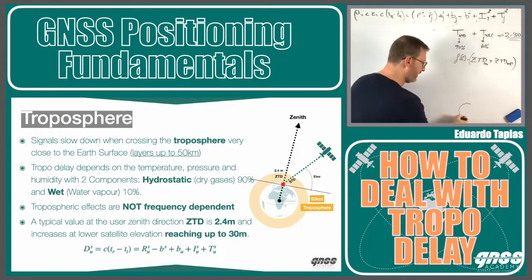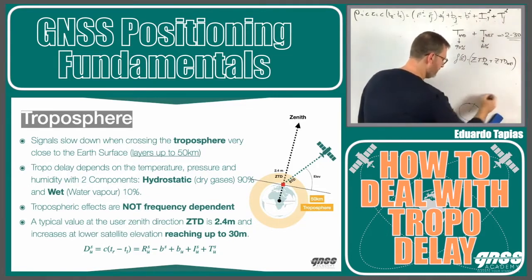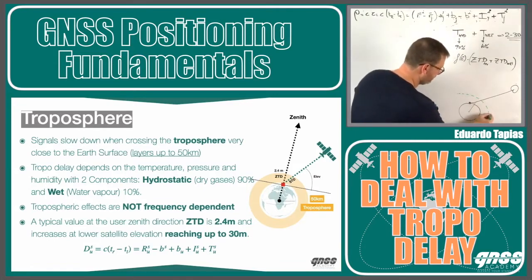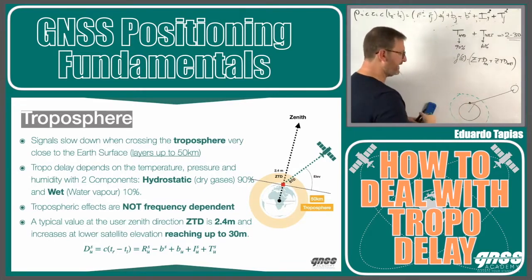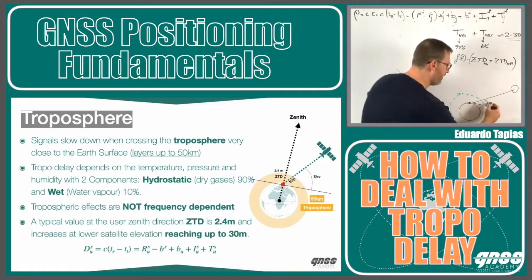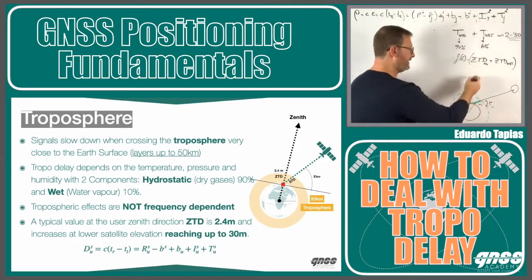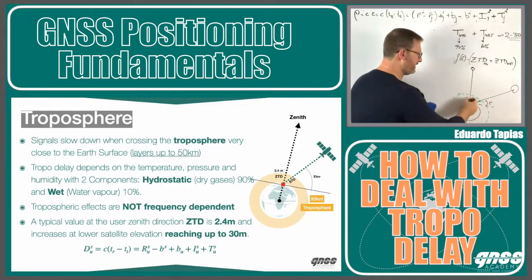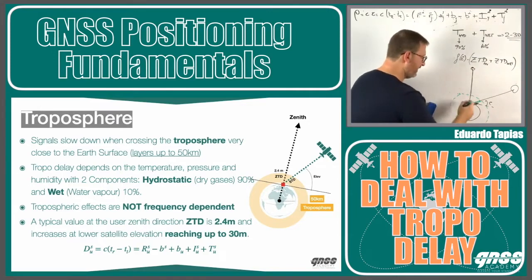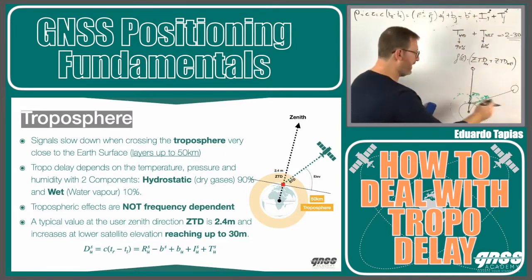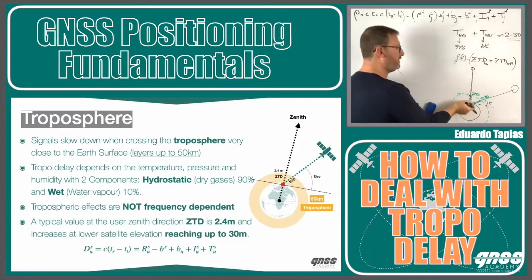Let's imagine you have the Earth, a receiver here, and a satellite here. If we put the troposphere layer here, a satellite at low elevation angles crosses more troposphere than the same satellite when it's at zenith. The zenith means from the receiver straight up. This is what we call the zenith tropo delay, and the other is the slant tropo delay.